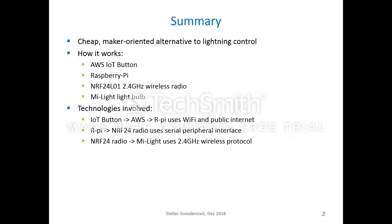It involves four pieces of hardware: AWS IoT button, Raspberry Pi, third-party wireless radio, and MyLight light bulb. It involves three communication technologies: Wi-Fi and public internet, Serial Peripheral Interface, and Wireless Protocol.